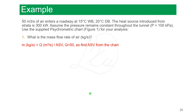Let's look at one example. 50 cubic meters per second of air enters a roadway at 15 wet bulb and 20 dry bulb temperature. The heat source introduced from the strata is 300 kW — that's the heat emitting from the underground strata and walls. Assume the pressure remains constant throughout the tunnel at 100 kPa, and use the supplied psychrometric chart, which is for 100 kPa.